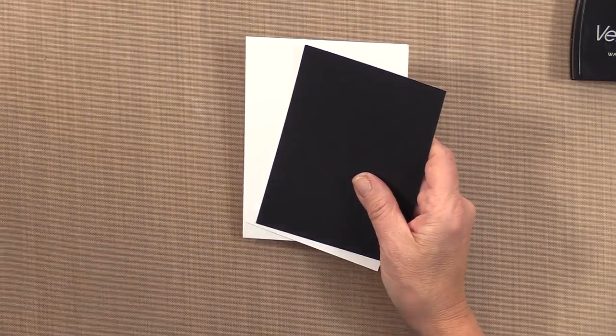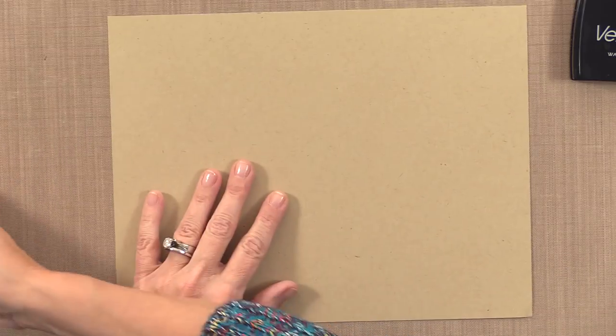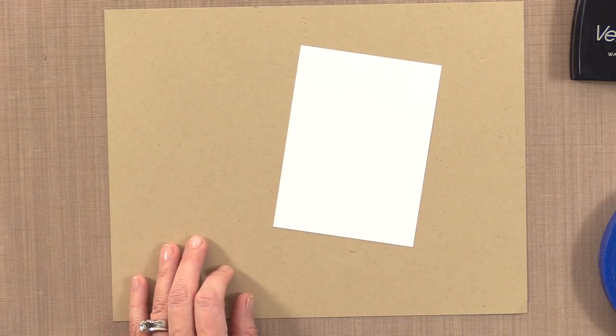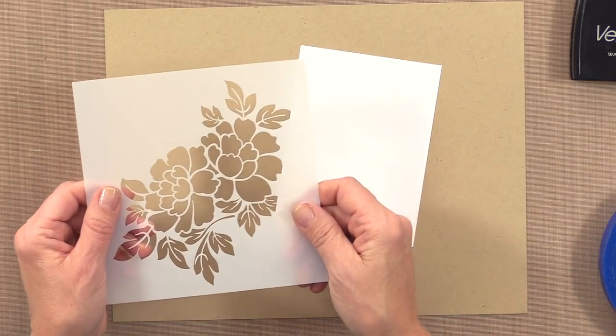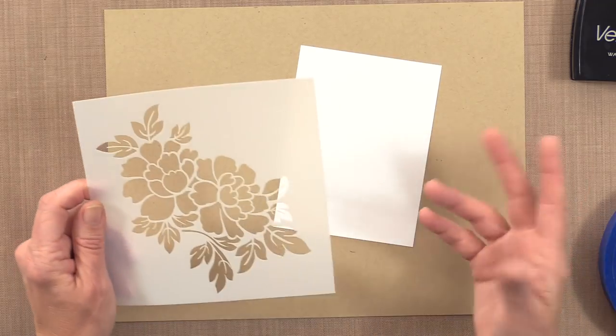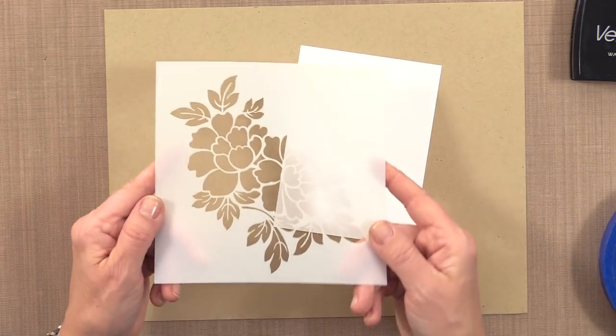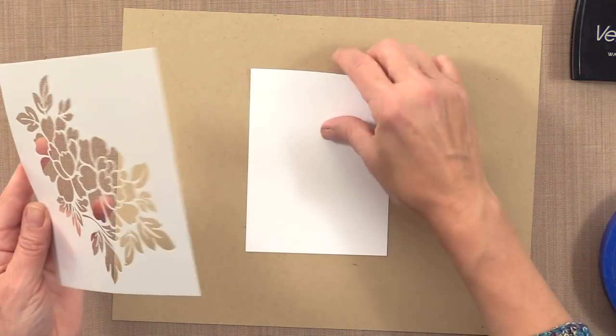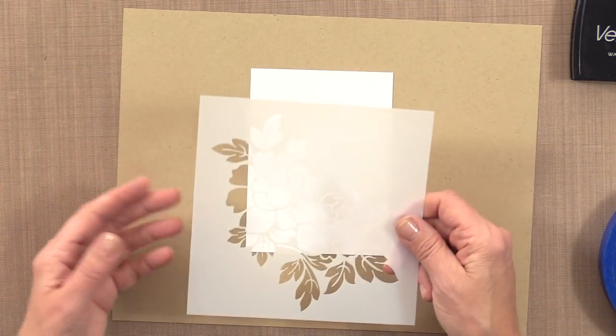Alright, so I have a piece of scrap paper here that I'm going to work on and then I'm going to grab this white piece of cardstock and my stencil. Now you can use any kind of stencils you want. I really like these big bold kind of stencils for this, but I've also tried it with other types of stencils and it looks nice.